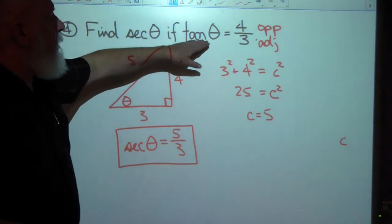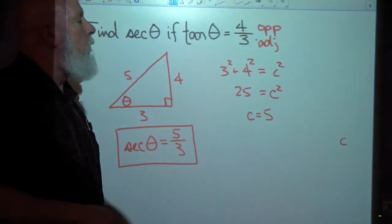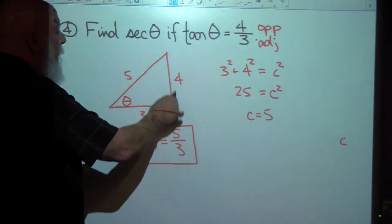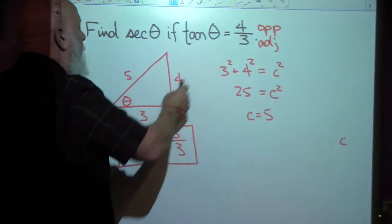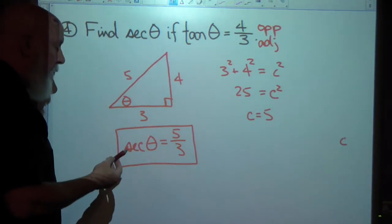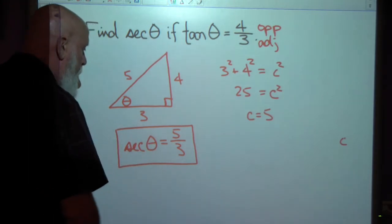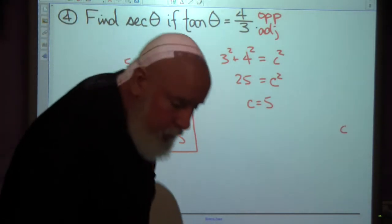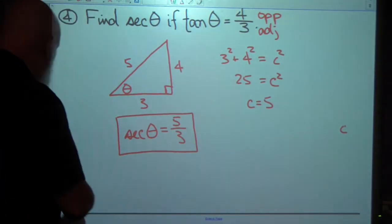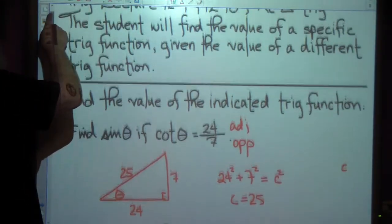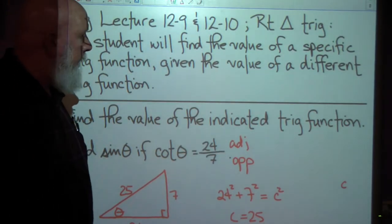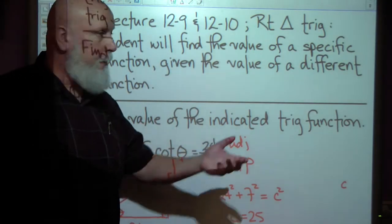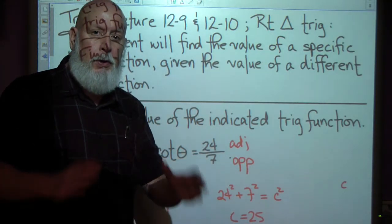We were given the value of the tangent, told we're doing right triangle trigonometry, so I drew the right triangle, labeled the sides I was given, found the missing side using the Pythagorean theorem, and evaluated the secant. The student will find the value of a specific trig function given the value of a different trig function within the context of a right triangle — you can do this!